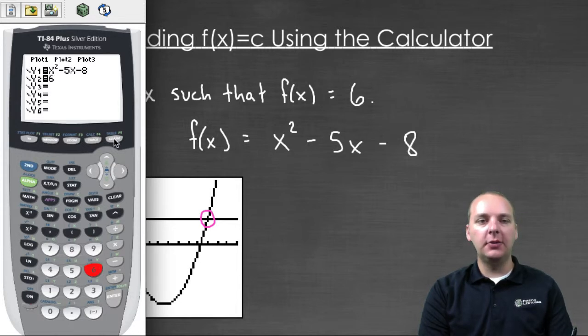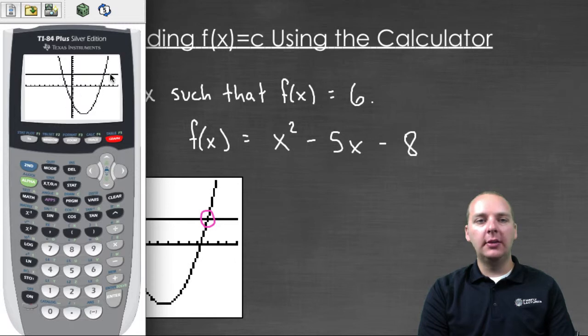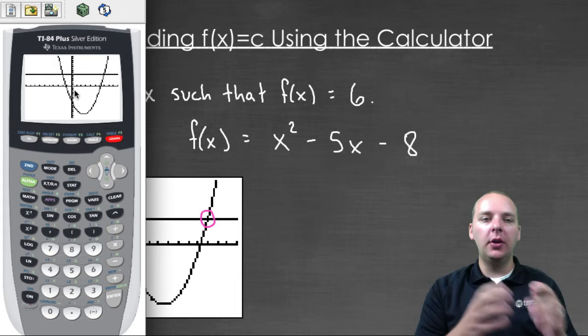And so when we graph these two guys, we'll get one that's a parabola, and then one that's a straight line. You might have to adjust your viewing window,